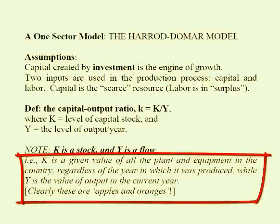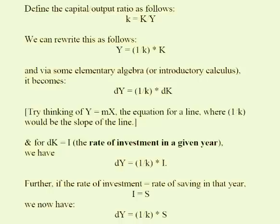Clearly, as I said, these are apples and oranges. So we have defined the capital-output ratio, lowercase k, as the stock of capital K divided by the flow of goods and services Y, GDP, in a given year.